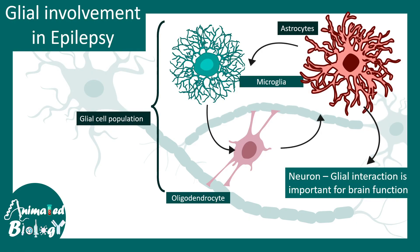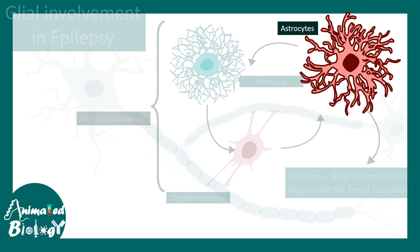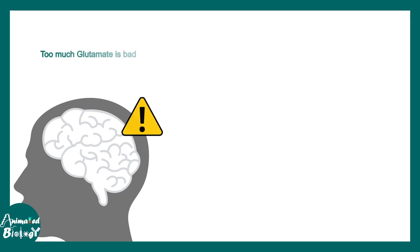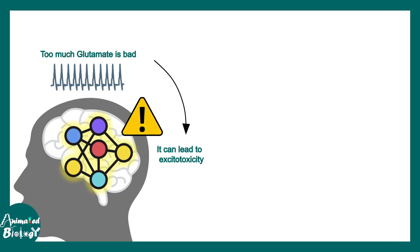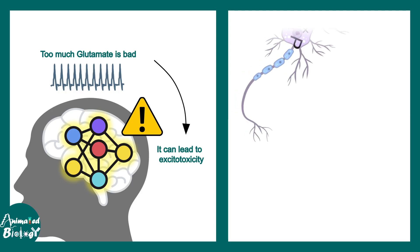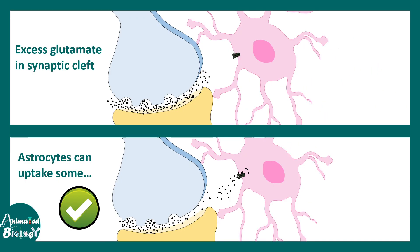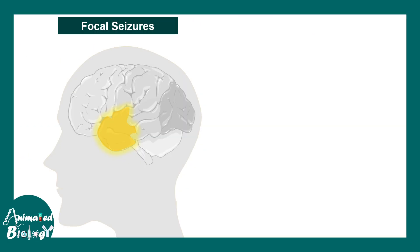So far we have taken a neurocentric view of epilepsy, but there is glial involvement as well. Astrocytes, one type of glial cell, form the tripartite synapse — they can form synapses with neurons. When there is too much glutamate, which is harmful to neurons and leads to excitotoxicity and neuronal death, astrocytes can come to the rescue by taking up excess glutamate from the synaptic cleft, thereby preventing excitotoxicity. This is how glial cells play a key role in disease progression.